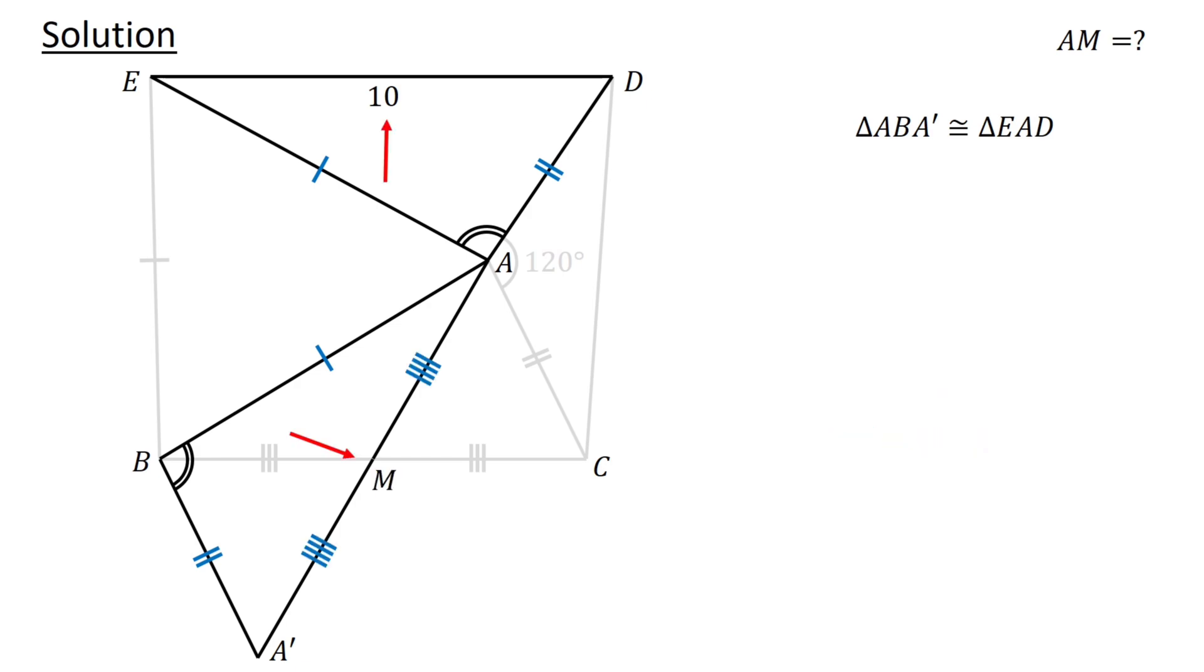Given that A'A and ED are corresponding sides in congruent triangles, we have A'A equals 10 units. By construction, A'A equals 2AM, so 2AM equals 10 units.